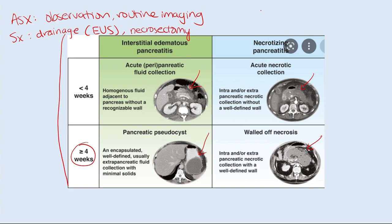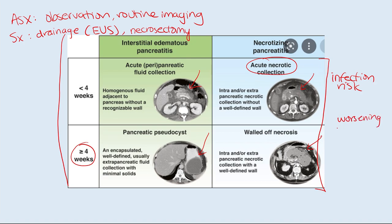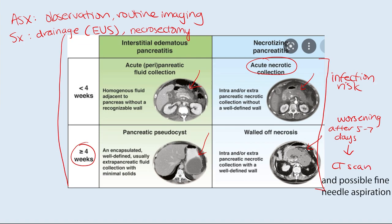One important clinical pearl: if you admit a patient on day one and they're getting better around day three or four, but then worsen again around day six or seven, be suspicious they're developing a complication such as an acute infected necrotic collection. Both walled-off necrosis and acute necrotic collections can become infected. If a patient is worsening after five to seven days, get a repeat CT scan to look for complications and possible infection.